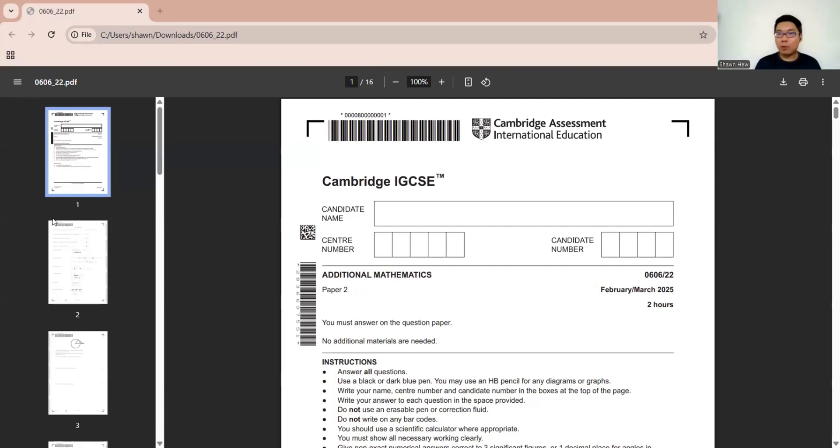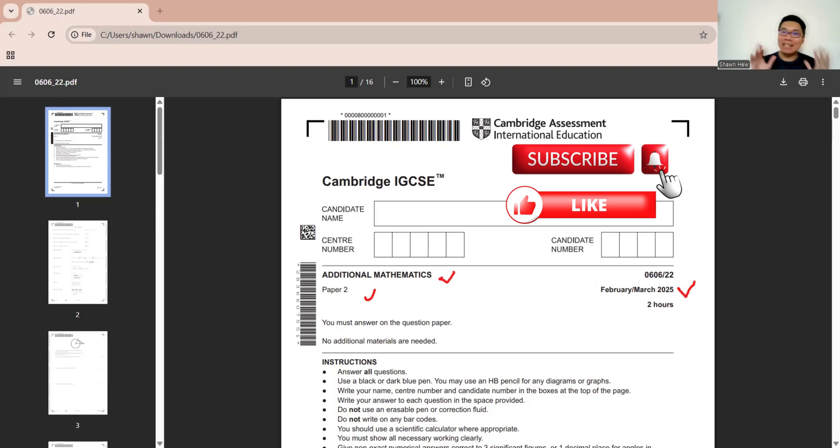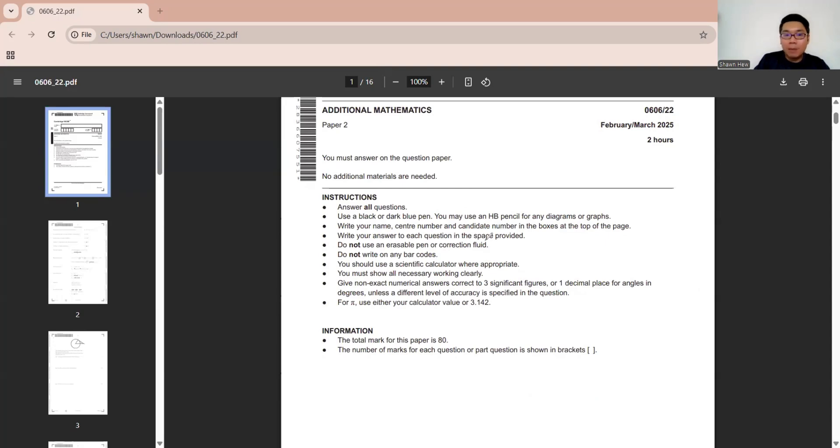Hello, ladies and gentlemen. Welcome to today's session. Today, we will discuss AdMath's paper 2 for 2025 FM paper. Before we start, please tell me to like, subscribe, and share to your friends that need this video. So remember, paper 2 is a calculator paper, so that's why they specify non-exact numerical answers must be in three significant figures or one decimal place for angles in degrees. If pi, then you can directly use your calculator value.